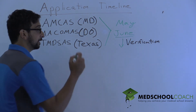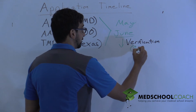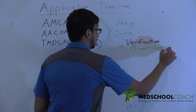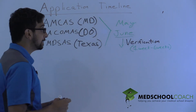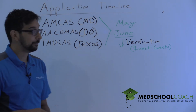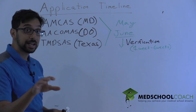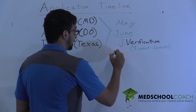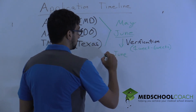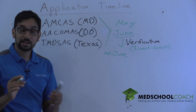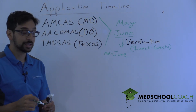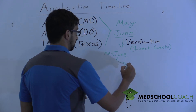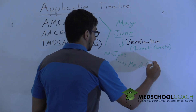Once it goes through the verification stage — which takes anywhere from one week to six weeks depending on when you submitted — the application becomes verified and you get that email. Once it becomes verified, it can actually go to schools. Before this, no school is seeing your application. The earliest this typically happens is mid-June. In reality, mid to late June is the earliest that schools can start seeing your application.